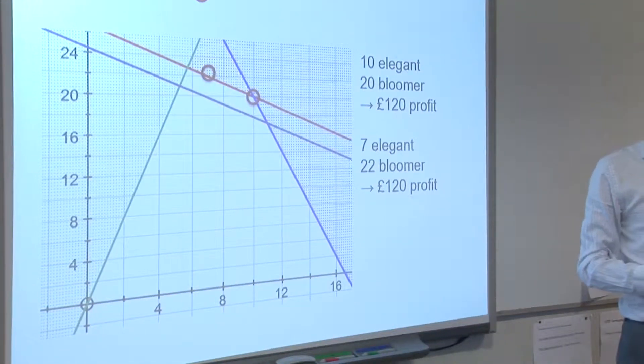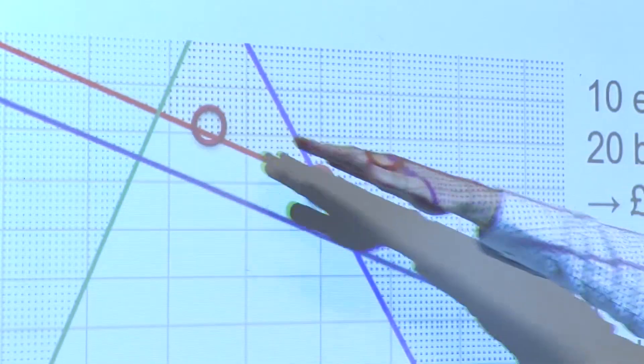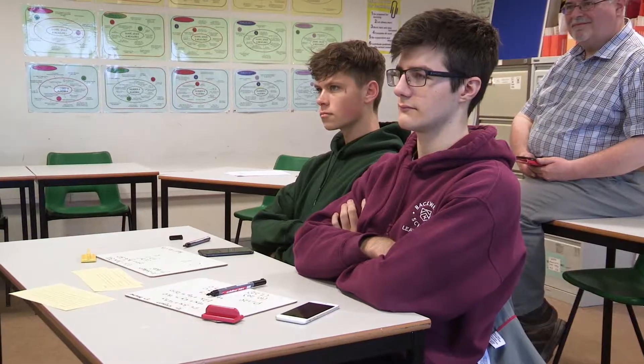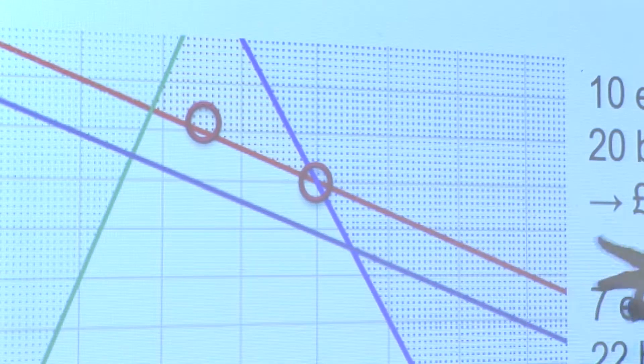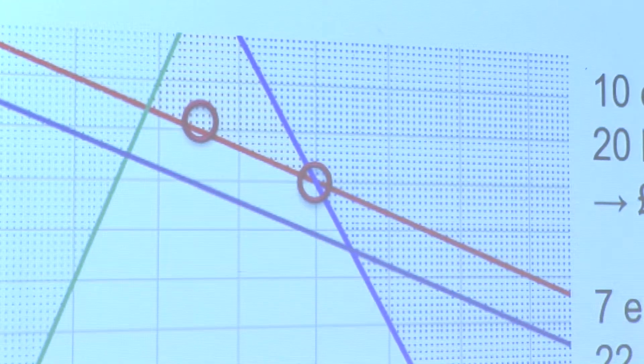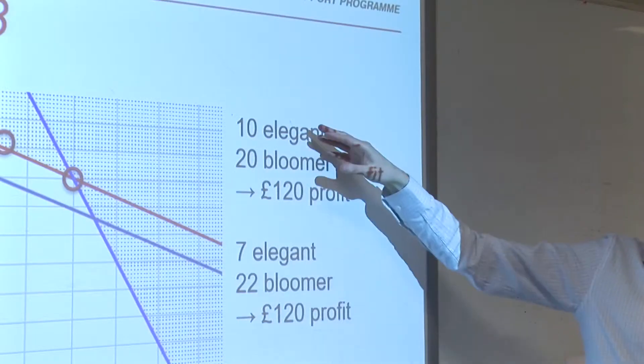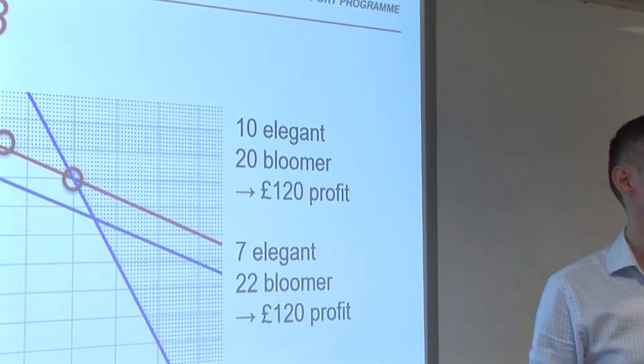Problem number three: both solutions give the same maximum profit, because the profit line is parallel to one edge of the feasible region — there are two different values that give the same profit. What other factors might be taken into account if you were the florist deciding which option to go for? You could say which one sells better, which one's more popular with customers. Ultimately this is what discrete maths is doing — we are modelling real-life situations, so sometimes we do need to adjust our answer and think about other factors that might come into play.